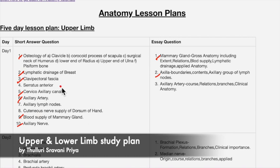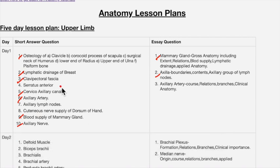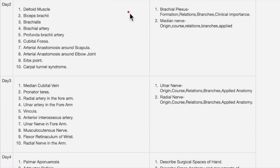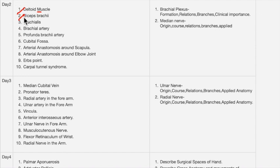Now we'll see the second day schedule. For day two, there are two essay questions: brachial plexus and median nerve — both are very important. For short answers, deltoid is the most important. Other important topics include biceps brachii, cubital fossa, and the angle of scapula. Elbow joint and carpal tunnel syndrome are also included on day three.